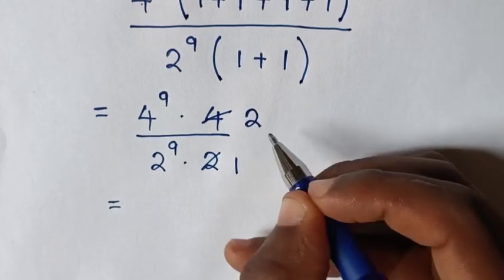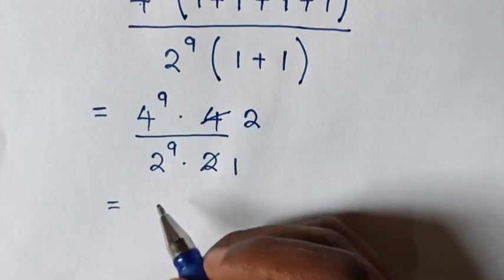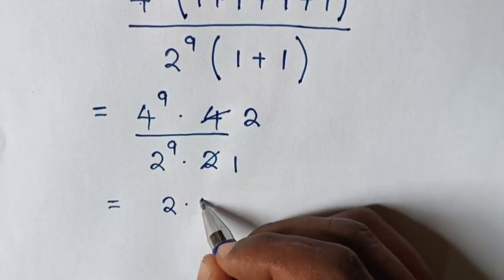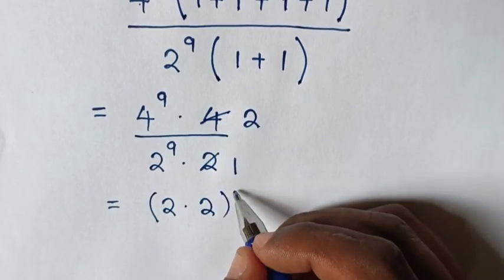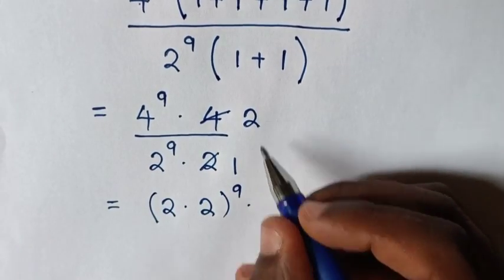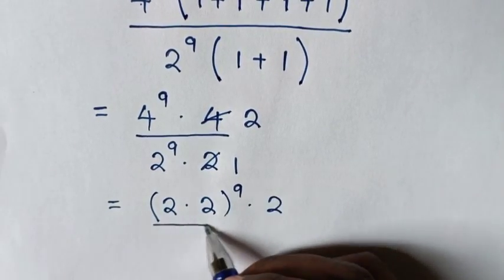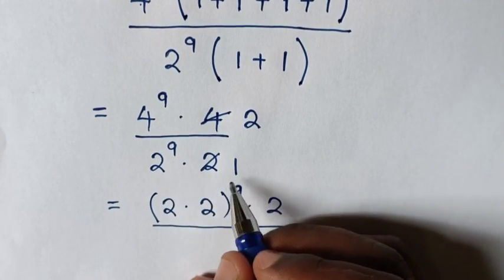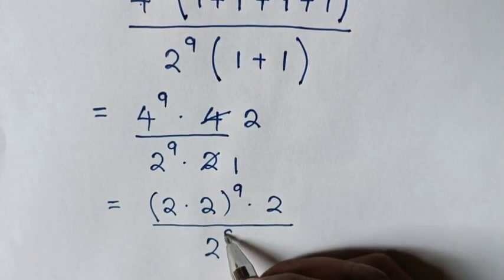So to simplify: 4 is the same as 2 times 2, so bracket power 9, times 2, over 2 power 9 times 2, which is 2 power 9.